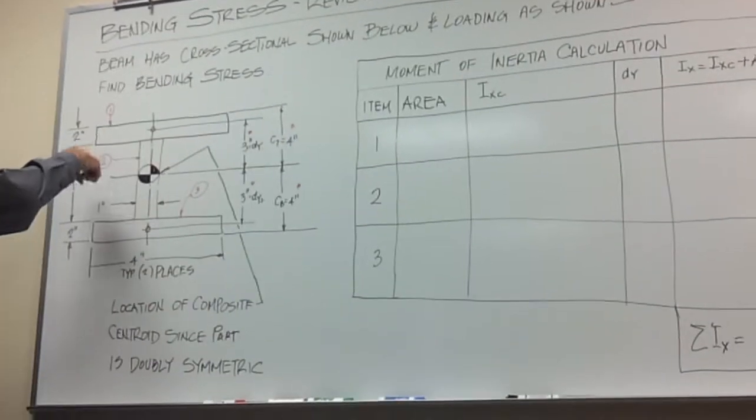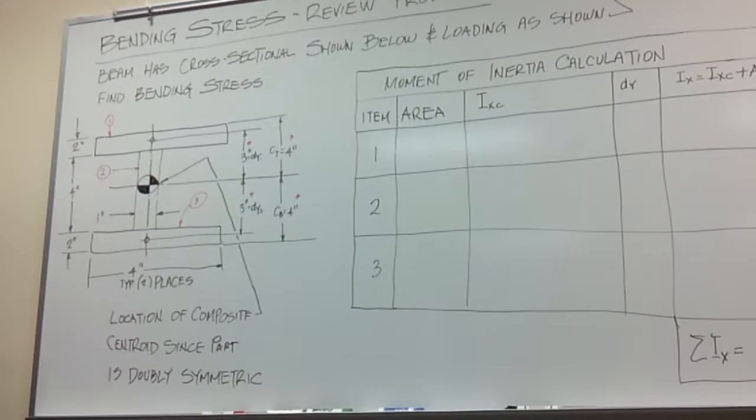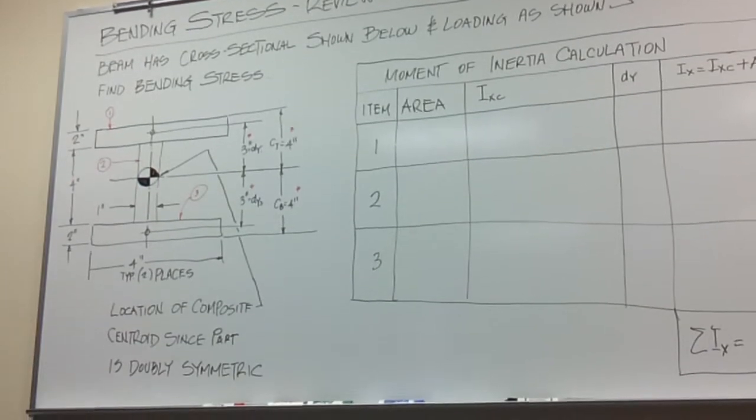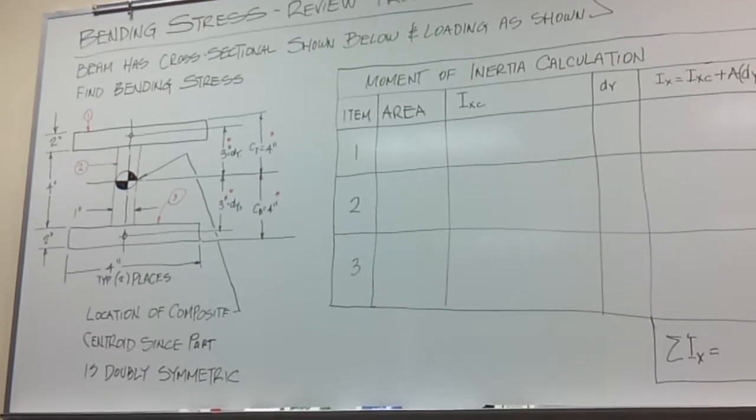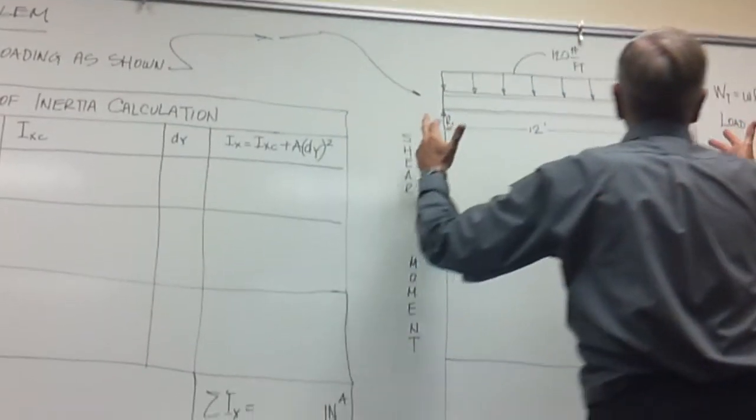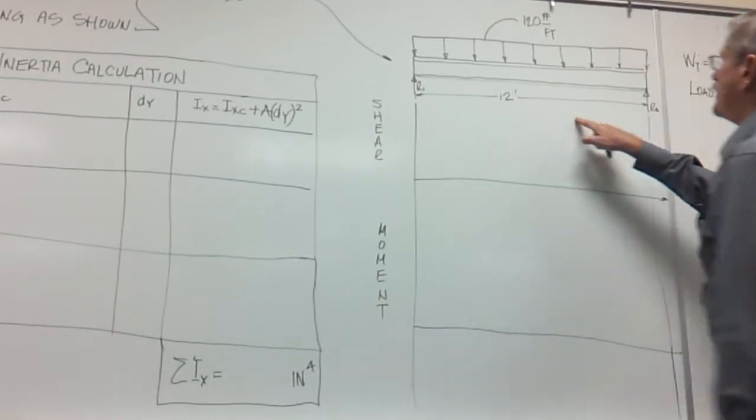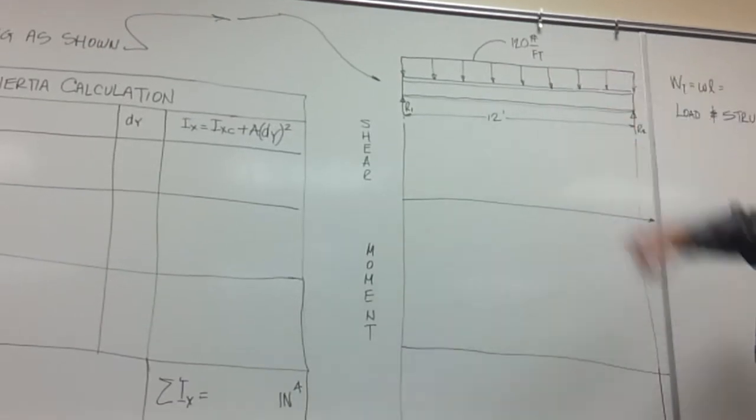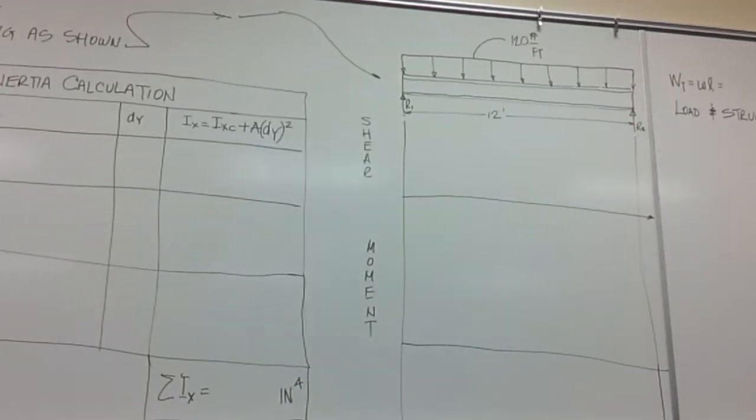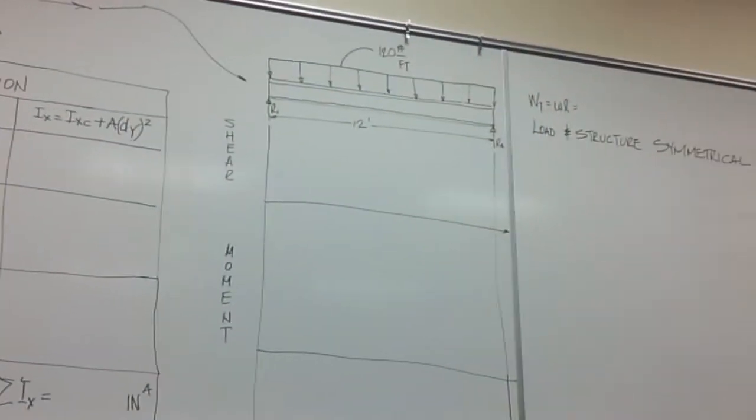The lollipops are pointing to the right thing here. They tell you this is the cross-section, what the structure looks like, the loading of the structure. The thing is 12 feet long with a uniformly distributed load of 120 pounds per foot, and they want to know what is the bending stress.